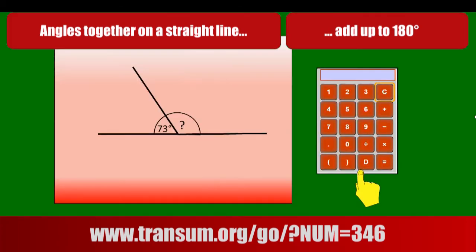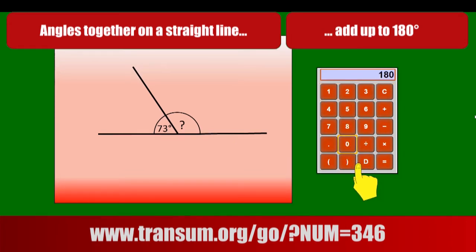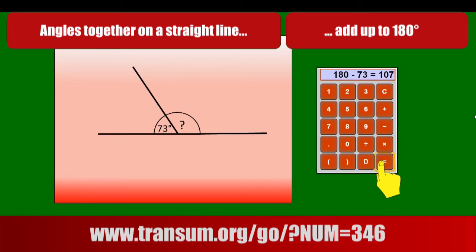Here we have a typical question. We've got two angles together on a straight line. One of them is 73. On the calculator, we'll start off with 180 degrees, because we know angles on a straight line add up to 180, and then take away the angle we're given — the 73 — to see what's left. That angle, which looks obtuse in the diagram even though it's not to scale, could well be 107 degrees.